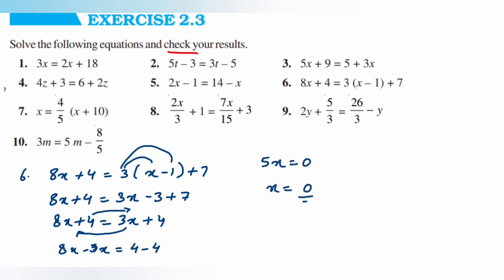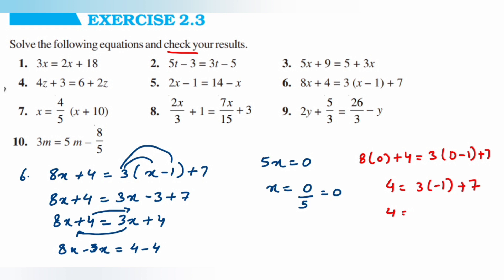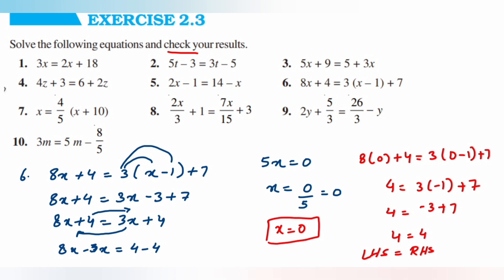So x is equal to 0 upon 5, which equals 0. We'll cross-check by substituting x is equal to 0: 8 into 0 plus 4 is equal to 3 into (0 minus 1) plus 7, giving 4 is equal to minus 3 plus 7, so 4 is equal to 4. LHS equals RHS, so x is equal to 0 is the correct answer. Now we'll move on to the seventh question.